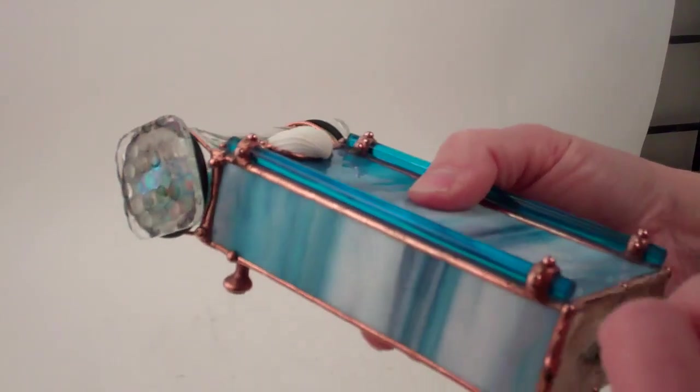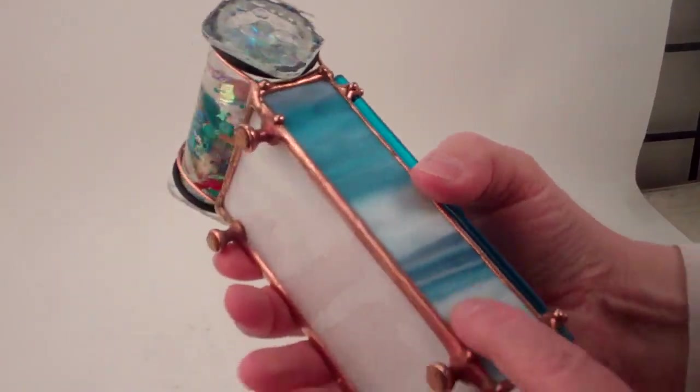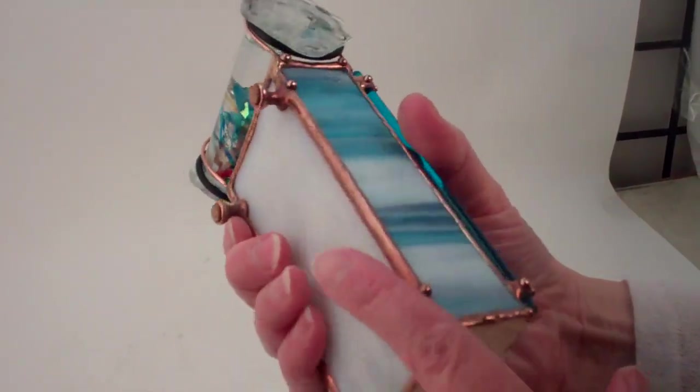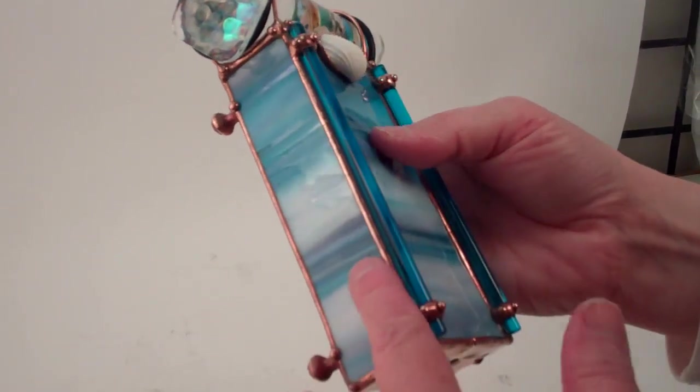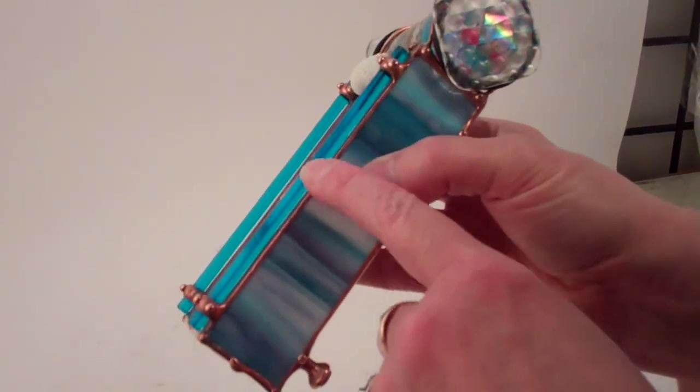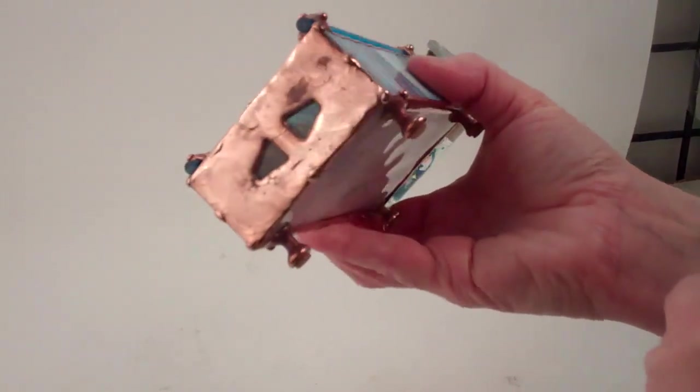She selects a seashell for the exterior and then this beautiful stained glass with white to the striations of blue and the deep turquoise blue glass rods.